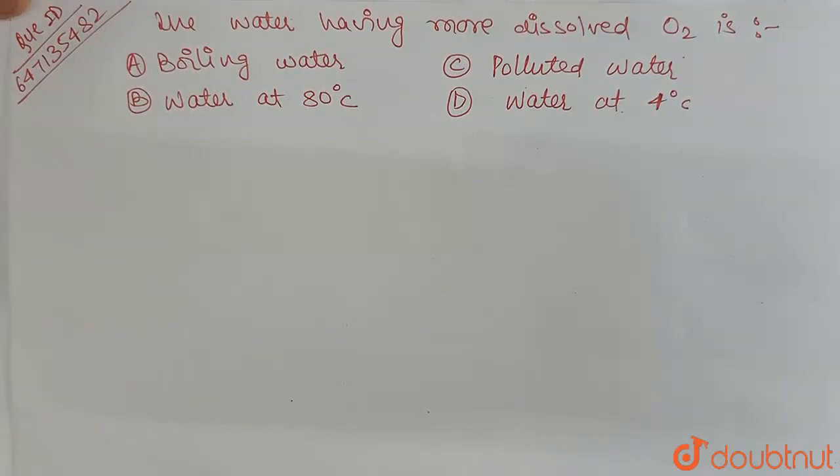A is boiling water, B is water at 80 degrees Celsius, C is polluted water, D is water at 4 degrees Celsius.